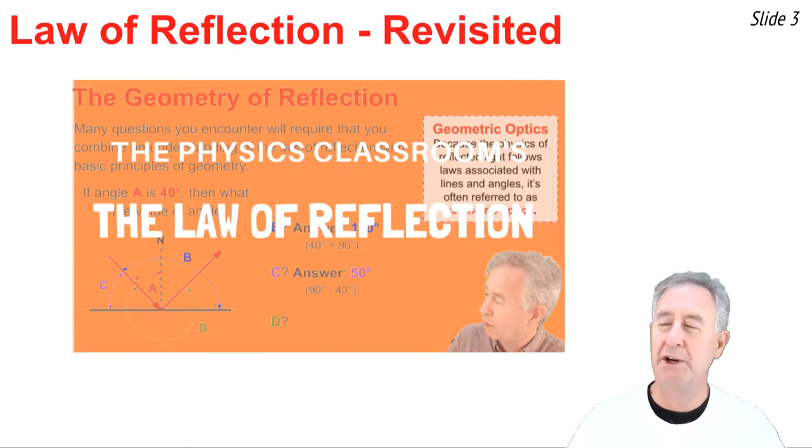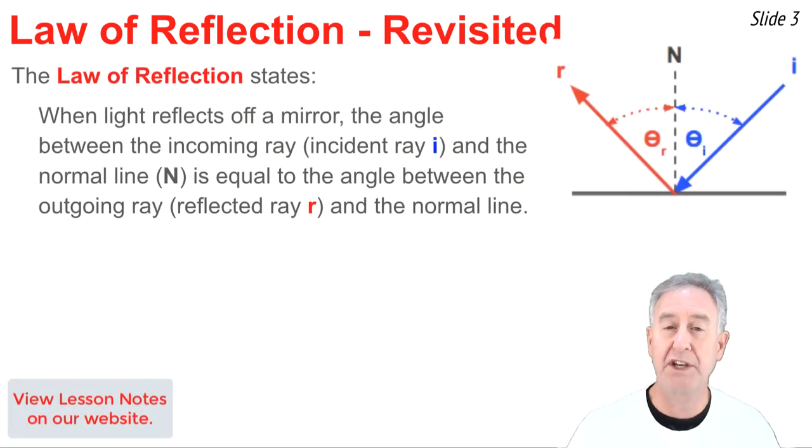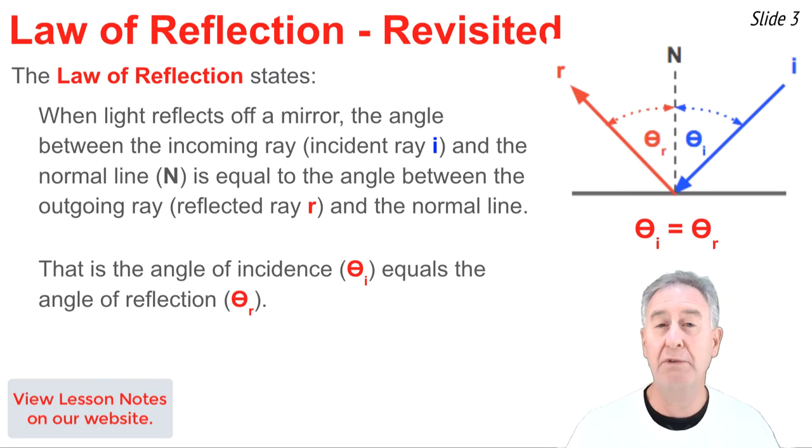In a previous video, I discussed the law of reflection. I've left a link to the video in the description section if you need to review it. One thing we mentioned was that whenever light reflects off a surface, the angle between the incoming light ray and the perpendicular or normal line is equal to the angle between the outgoing light ray and the perpendicular or normal line. We call these angles the angle of incidence and the angle of reflection, noted by the Greek letters theta-i and theta-r on the diagram.